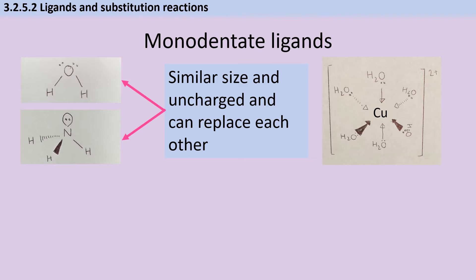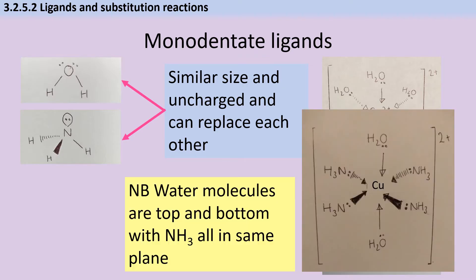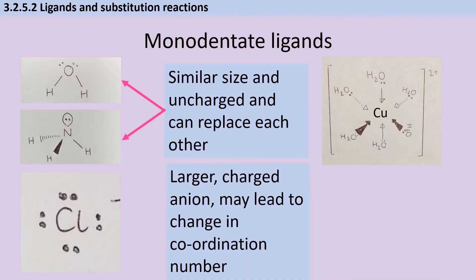Water and ammonia are monodentate ligands of similar size and no charge which can replace one another in substitution reactions. You might expect six ammonia molecules to replace six water molecules, but this is incorrect. Instead we only see partial substitution with four ammonia molecules replacing four water molecules. A chloride ion is a larger ligand and four of these will replace six water molecules. This leads to a change in coordination number.